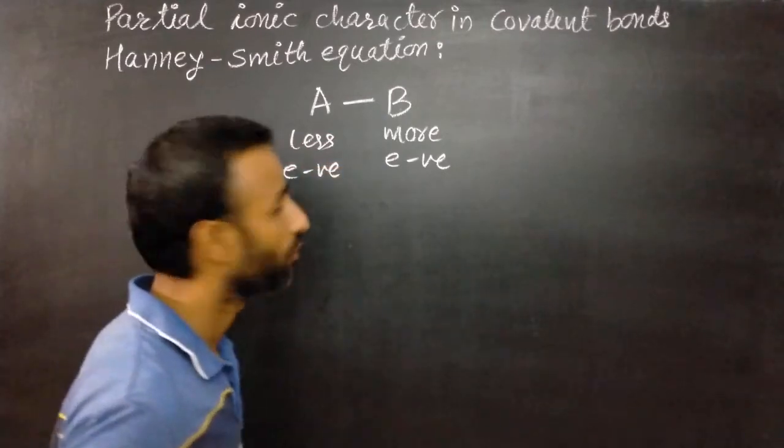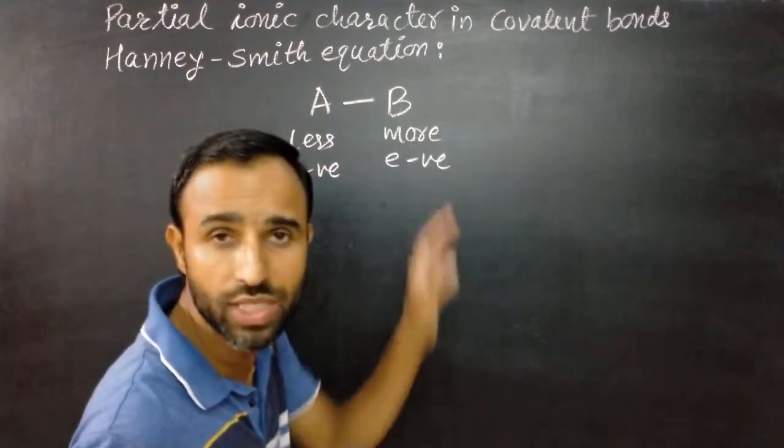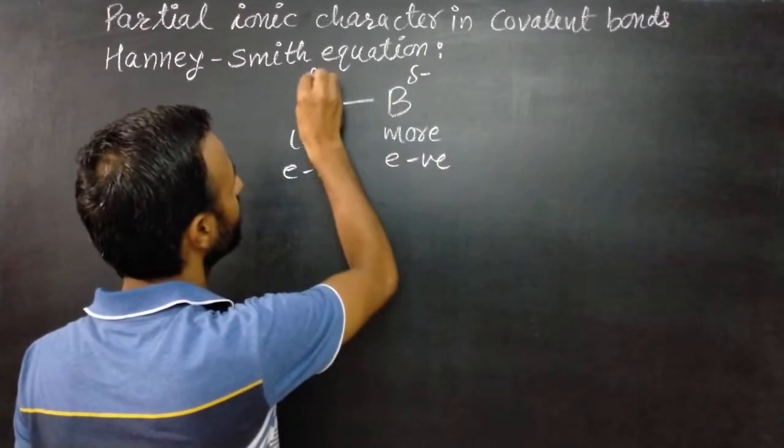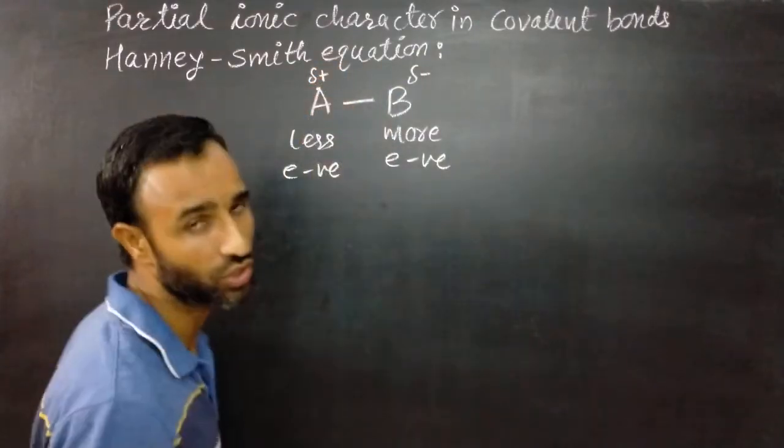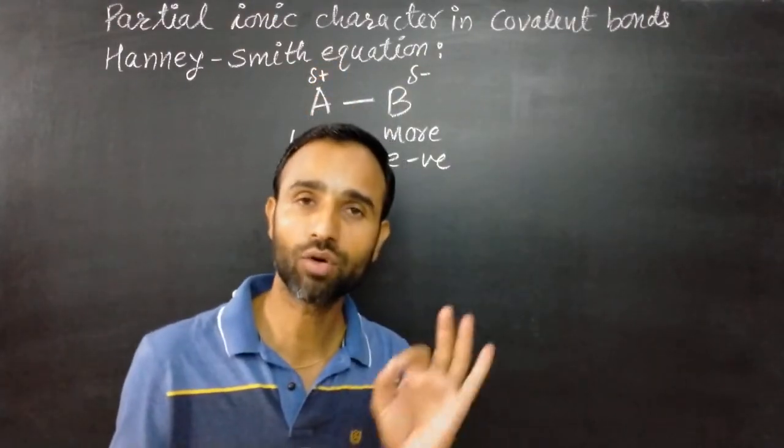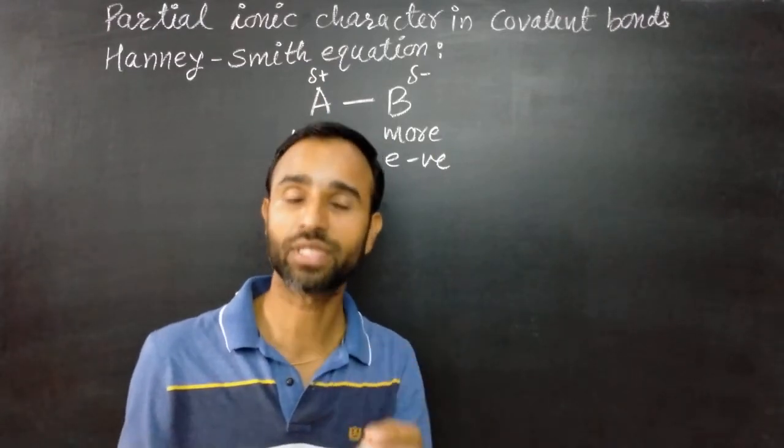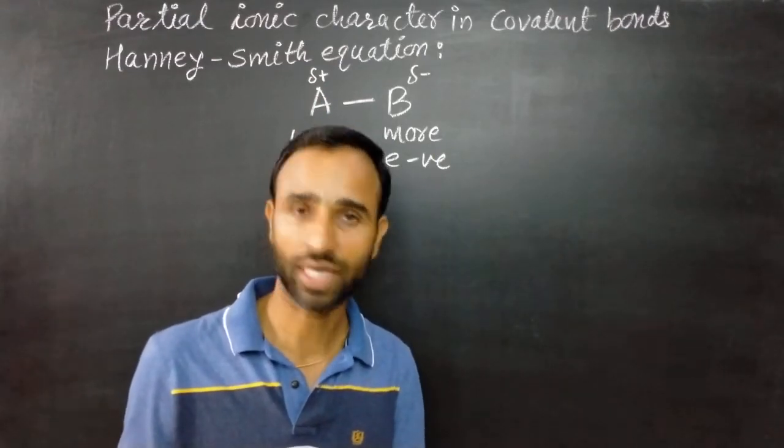Obviously, the shared pair is more towards B. So it acquires partial negative charge and A acquires partial positive charge. That is called polar covalent bond and it has some percentage of ionic character.